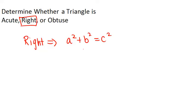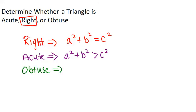But what we haven't learned is how to determine whether, if it doesn't work, if the triangle is acute or obtuse. So here's the pattern. It's acute if, instead of being equal, a squared plus b squared is greater than c squared. And it's obtuse if, instead of being equal, a squared plus b squared is less than c squared.